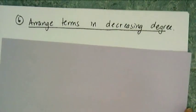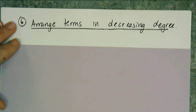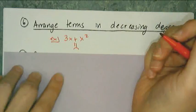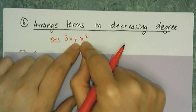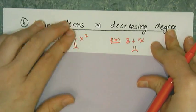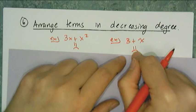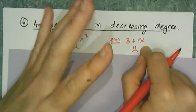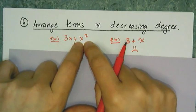Rule 6 is to arrange terms in decreasing degree. The highest degree is the most important, so we like to see it first. If I have 3x + x², that's a big frowny face because I don't want x² at the end. With something linear, 3 + x is a frowny face because x is more important than 3 and should come first. When you write equations for tables and graphs, I expect variable terms before constant terms.